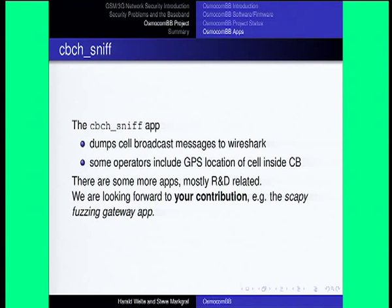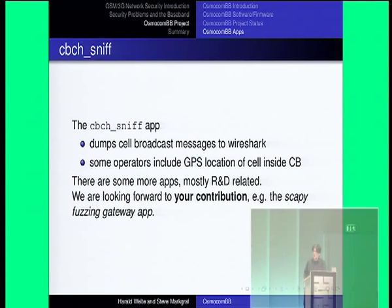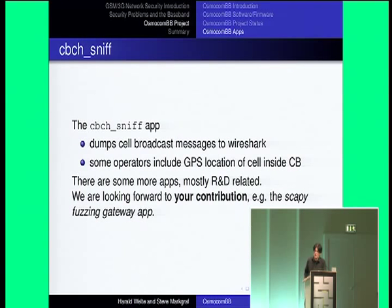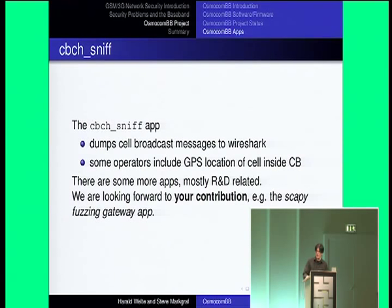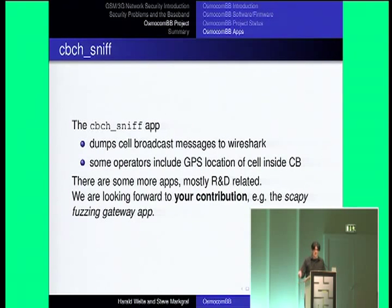Then we have CBCH sniff, which is a cell broadcast channel sniffer that gets all the data it can from the cell broadcast channels. A broadcast channel is something that used to be used more than it is today. Some operators actually put the GPS coordinates of cells in the cell broadcast — O2 in Germany is one example. There are some more apps that are mostly R&D related. The idea is that we have this stack now with libraries and interfaces so you can use it. If you want to write a Scapy fuzzing gateway application that establishes a radio channel to a cell and sends arbitrary packets from Scapy over UDP into this gateway, it's all there. The point is that we have those libraries — go ahead, write your own applications, do interesting things.